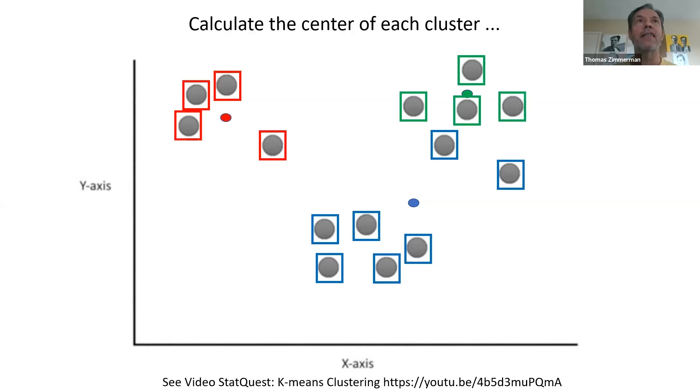So we do the algorithm again. For each object, we find out what centroid are they closest to. And this object is closest to the red. Matter of fact, it looks like all four are closest to the red. These guys are closest to the blue. What's interesting, what about this guy? What is he closest to?